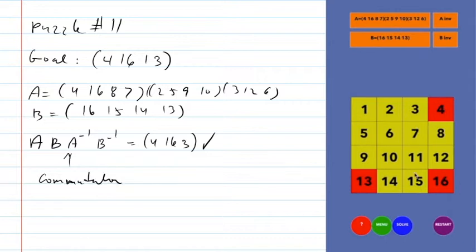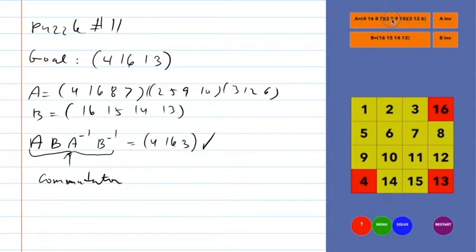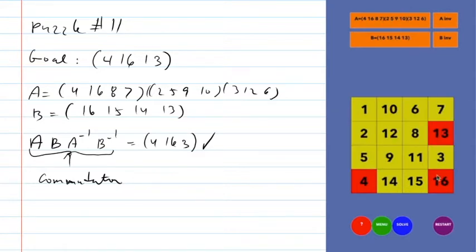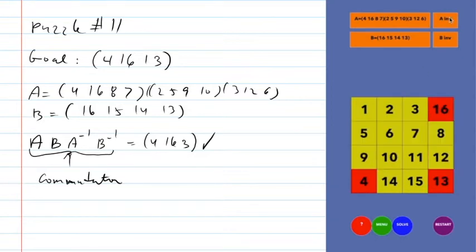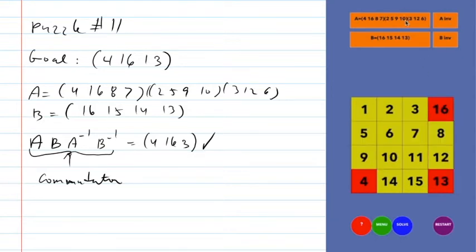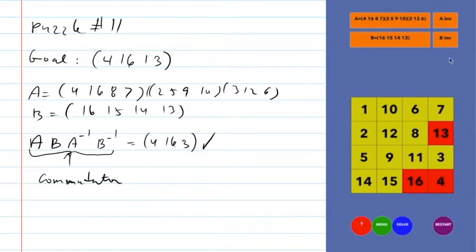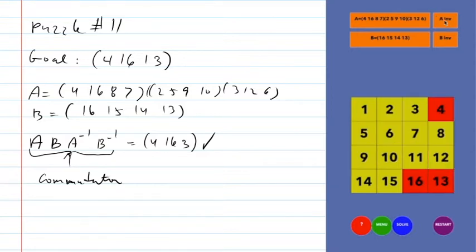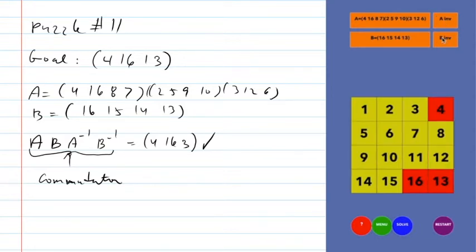This is critically important: of the four algorithms we're going to learn for the Rubik's Cube, two of them can be understood in this way. Let me look at it one more time. Move A gets the thing in position 4 to position 16 and does damage up top. Before I do A-inverse, I do move B to put the 4 where the 16 is. Now A-inverse sends the 4 back to where the 16 started — not the 16 itself. All other mess is fixed by the inverse. Then B-inverse finishes it.